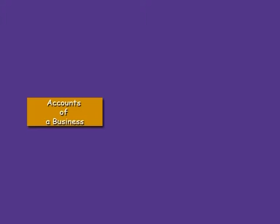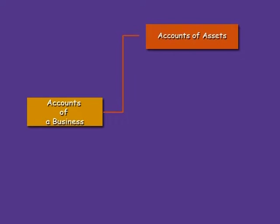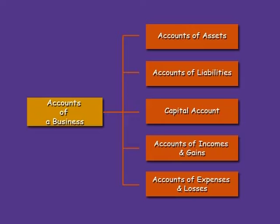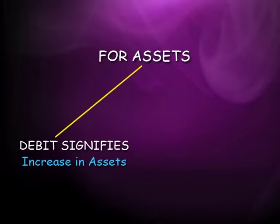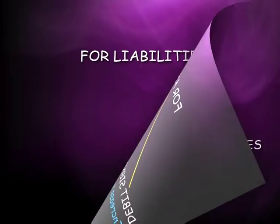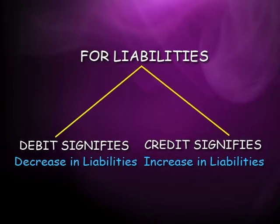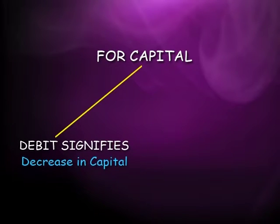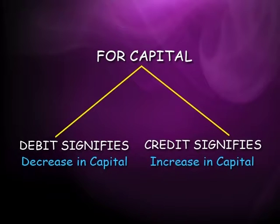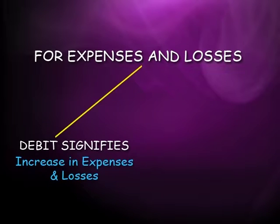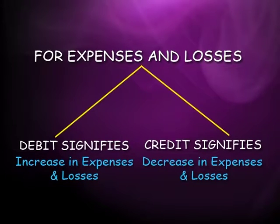All accounts of a business can be categorized under the following heads: accounts of assets, accounts of liabilities, capital account, accounts of incomes and gains, and accounts of expenses and losses. For asset accounts, debit signifies an increase and credit signifies a decrease. For liabilities, debit signifies a decrease and credit signifies an increase. Likewise for capital, debit signifies a decrease and credit signifies an increase. For incomes and gains, credit signifies an increase and debit a decrease. For expenses and losses, debit signifies an increase and credit signifies a decrease.